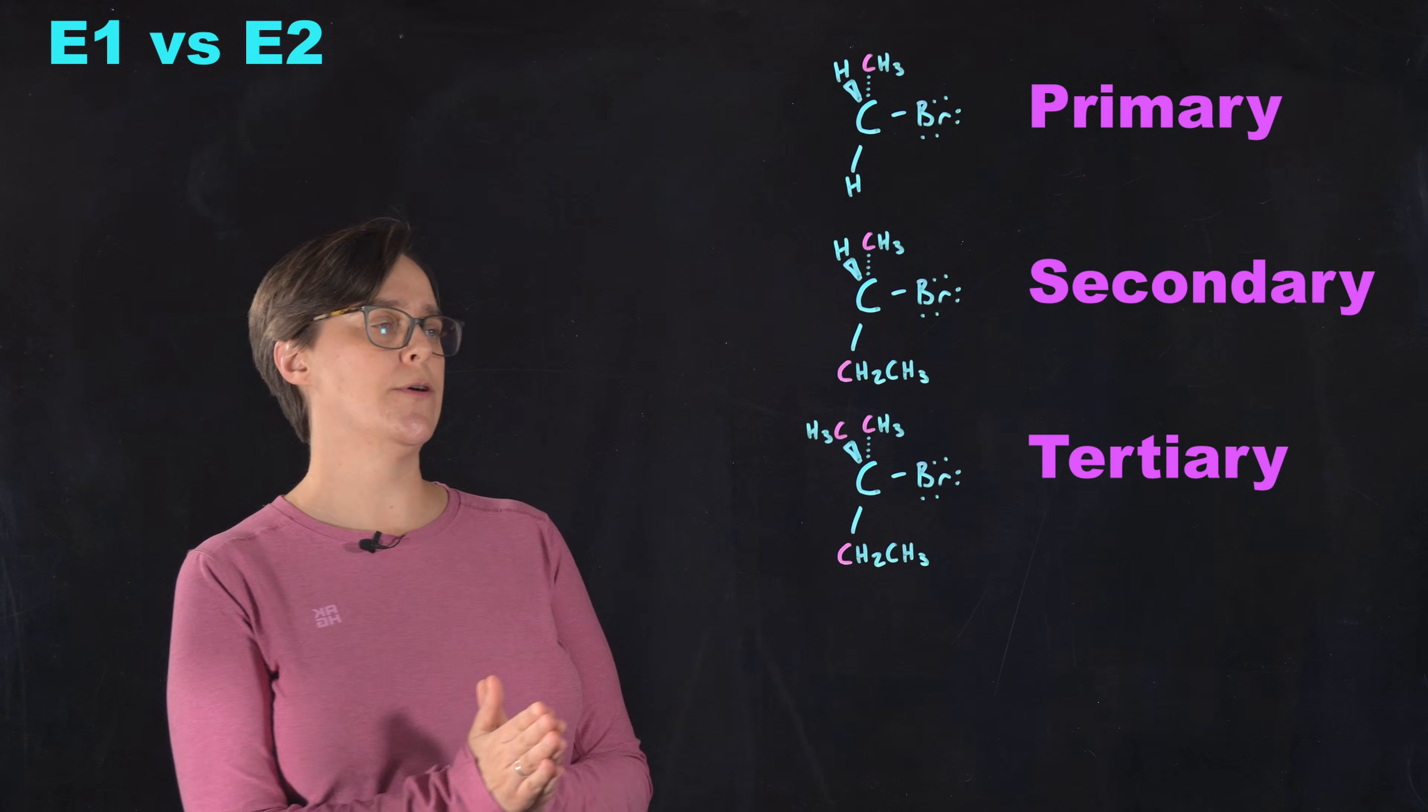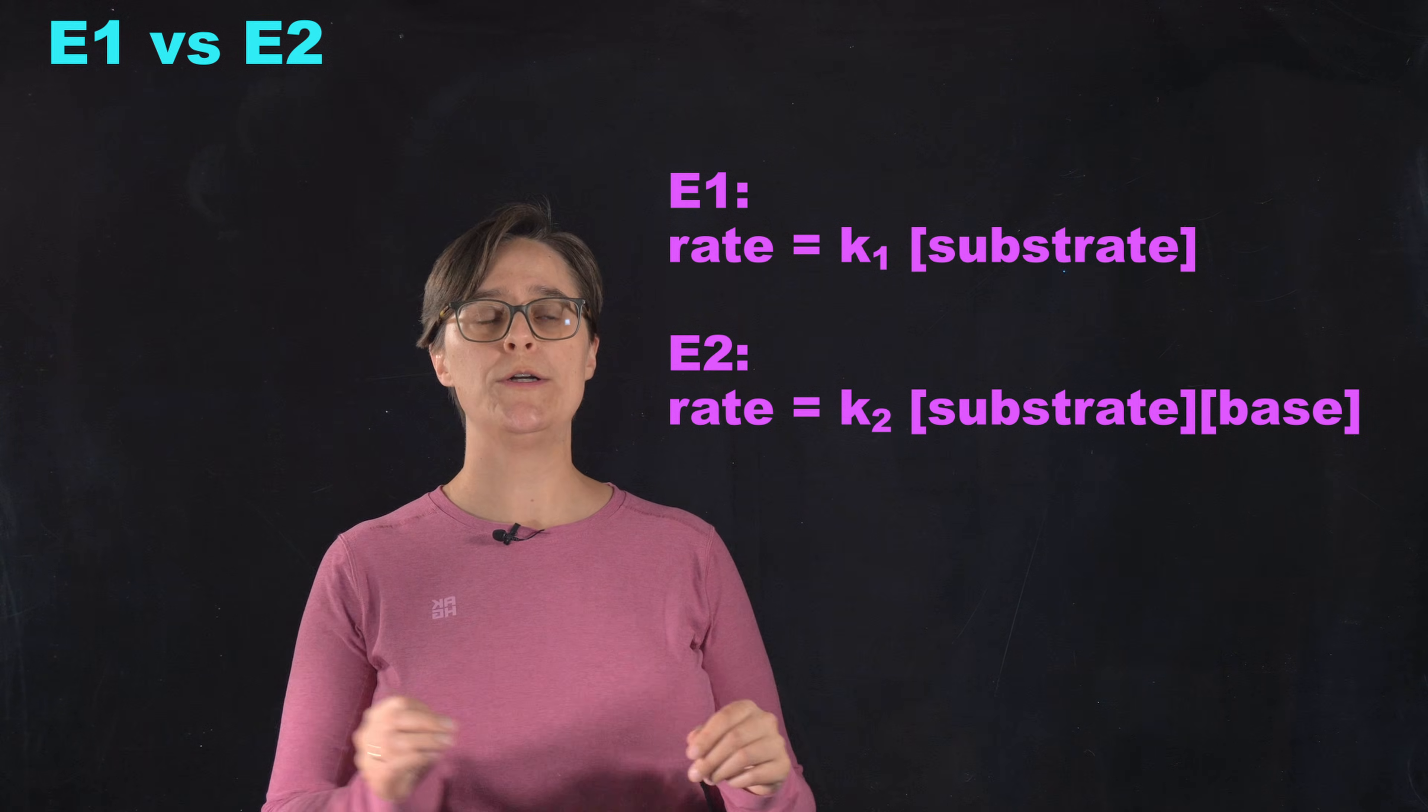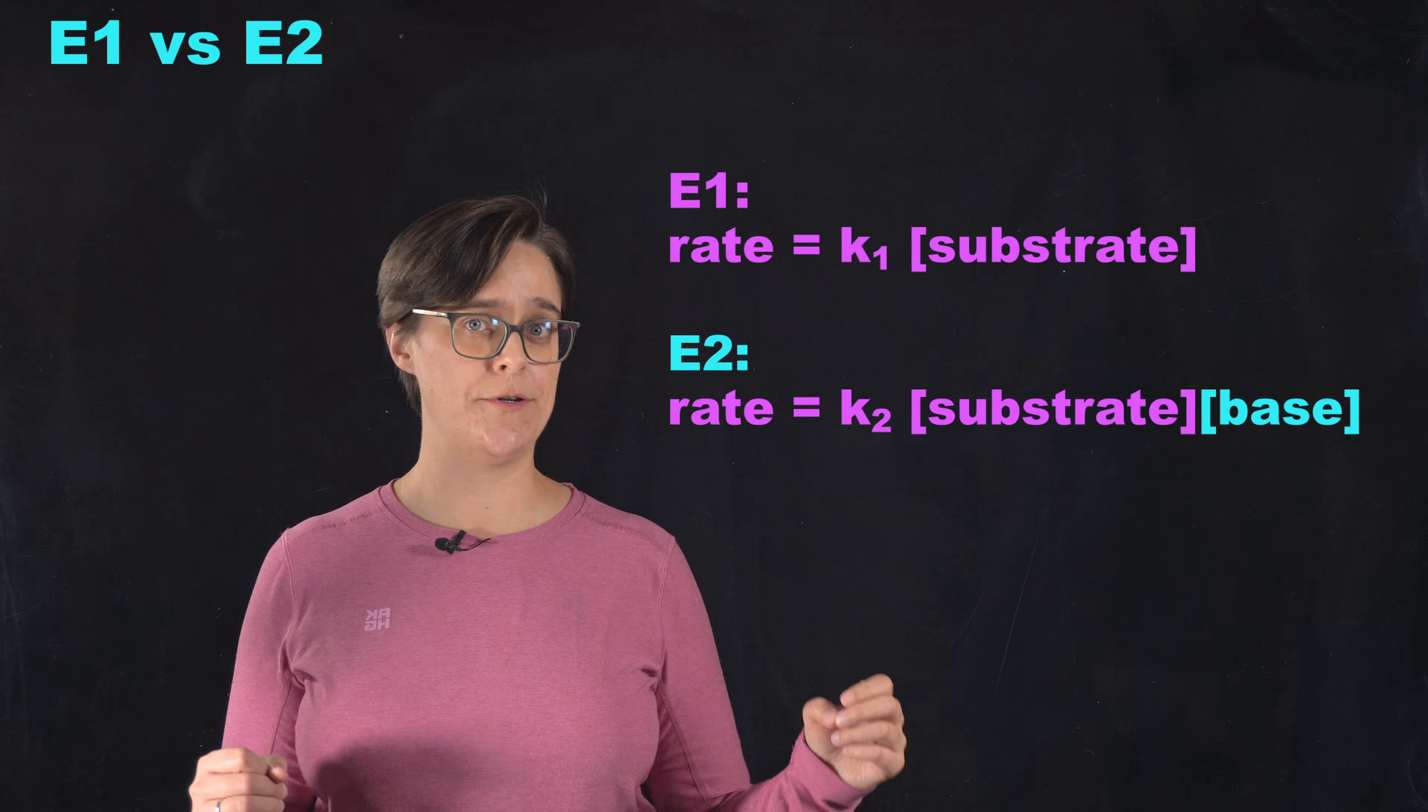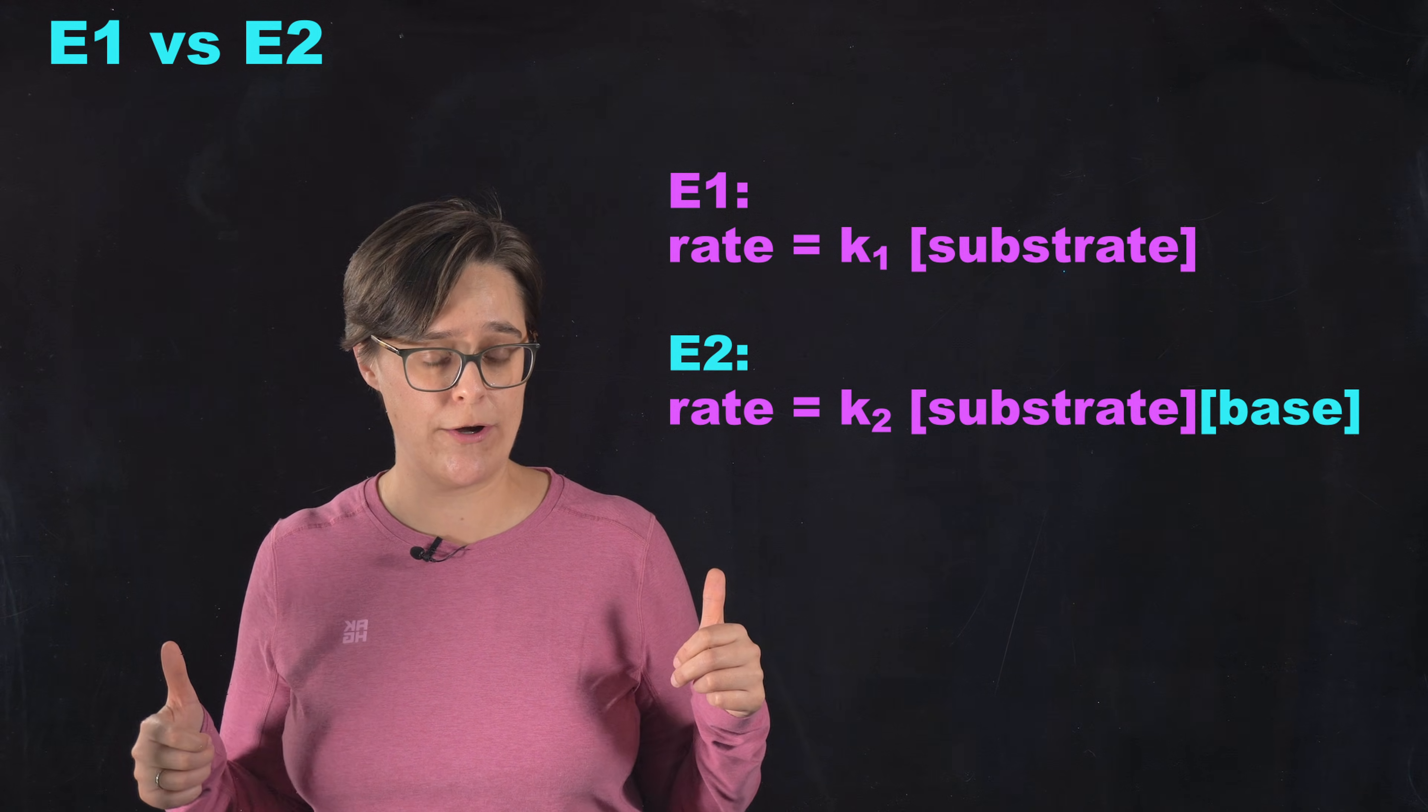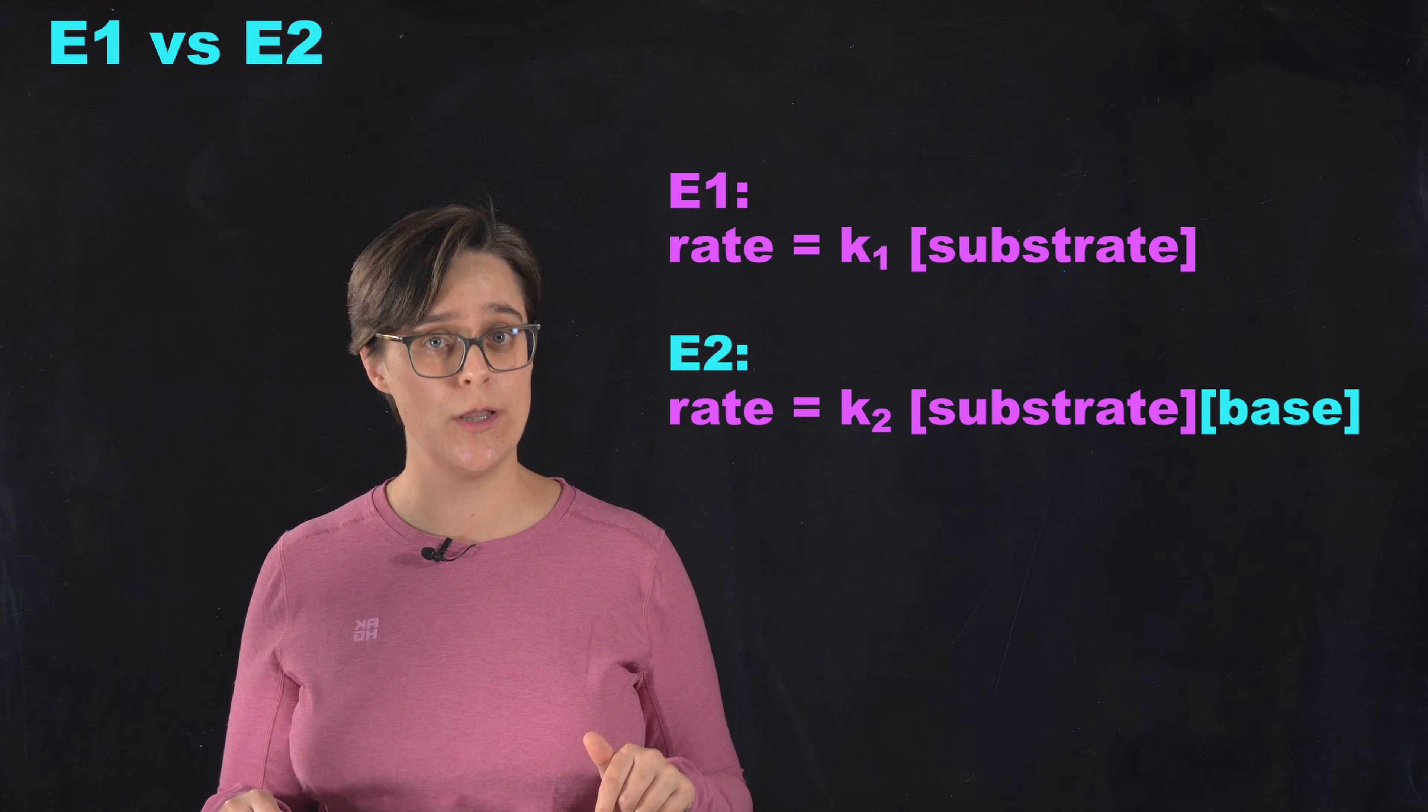To understand why, let's look at the rate laws for both E1 and E2 reactions. So remember that the concentration of reactants in the rate determining step are what show up as concentrations in the rate law. And E2 has concentration of base in the rate law. That means we can make E2 happen faster if the concentration of the base is a lot higher. So E2 is favored if it's a strong base with a high concentration. E1 is favored if it's a weak base with a lower concentration.